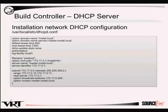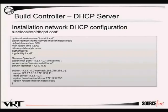Next we configure DHCP. We tell it to load the PXE bootloader via the filename option, tell it where to mount the root filesystem — a FreeBSD 9 image extracted on the build controller — and set the server name used for PXE and the DHCP server identity. The rest is a standard, very simple DHCP server configuration.